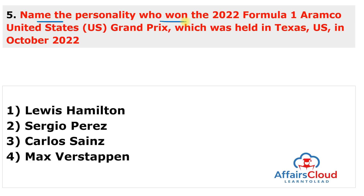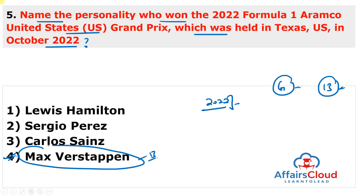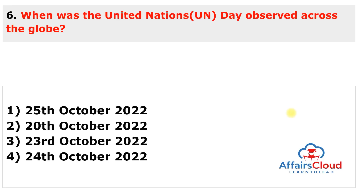Next question: who won the 2022 Formula One Aramco United States Grand Prix held in Texas in October 2022? The answer is Max Verstappen. Belgian driver Max Verstappen of Red Bull Racing won the 2022 Formula One Aramco United States Grand Prix held at the Circuit of the Americas in Austin, Texas. With this victory, he equaled Germany's Sebastian Vettel and Michael Schumacher's record of 13 wins in a Formula One season. Verstappen defeated Lewis Hamilton of Mercedes and Charles Leclerc of Ferrari.